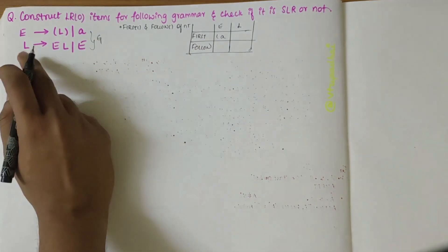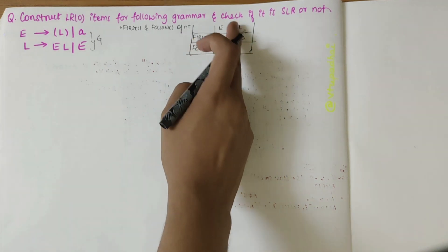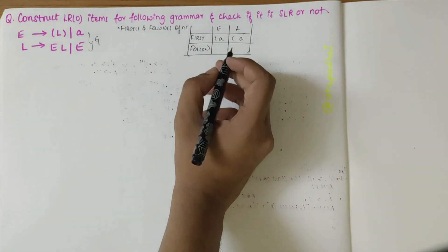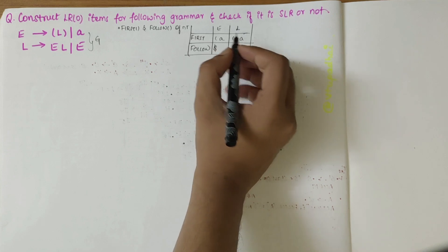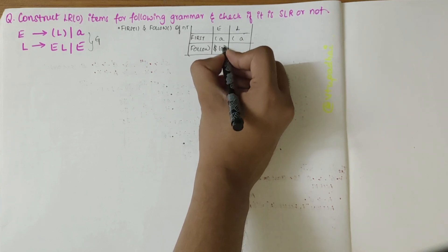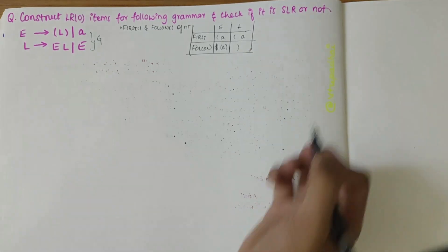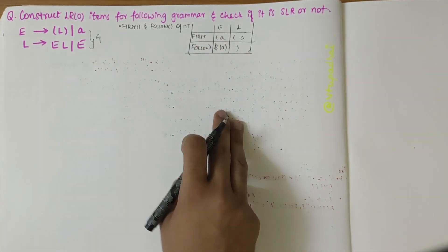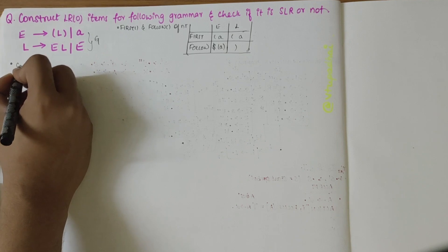First of E and L would be the same: open bracket and A. Follow of E would be dollar, then open bracket, A, and close bracket. I'm now done with the First and Follow. My next step is to construct the augmented grammar G dash from the given grammar G.